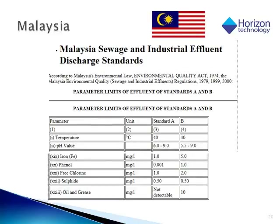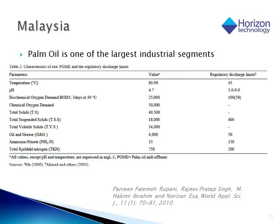Malaysia has been regulating the environmental aspects of their industry for quite some time. The parameter and limits of effluent standards are shown here as A and B depending on the kind of water body. Palm oil is one of the largest industrial segments in Malaysia — when I visited, I visited the palm oil board. The actual concentration of oil and grease in palm oil mill effluent and the regulatory discharge limits are listed here: it goes from 4,000 in the original material to 50 which they're allowed to discharge, so they have to do quite a bit of work to clean up the effluent.